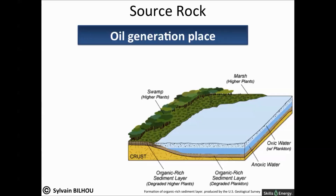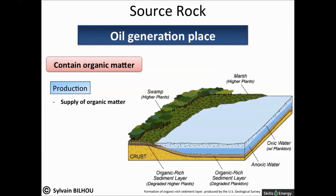Oil and gas are formed from organic matter, such as dead plants and animals. The main characteristic of a source rock is to contain fossilized organic matter. These conditions require particular depositional settings. First, production of organic matter is needed in the area. As the depositional environment of a source rock is usually aquatic, the organic matter is generated where the majority of organisms live, commonly within the top 50 meters of the water column.